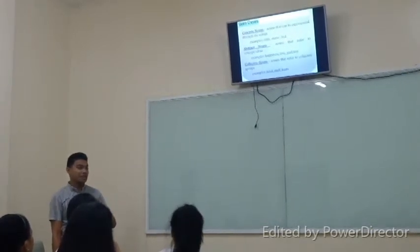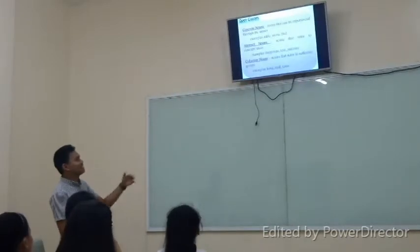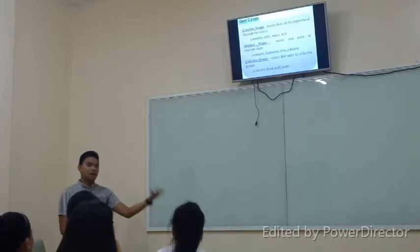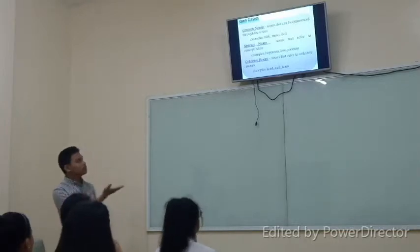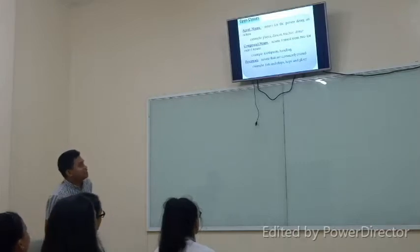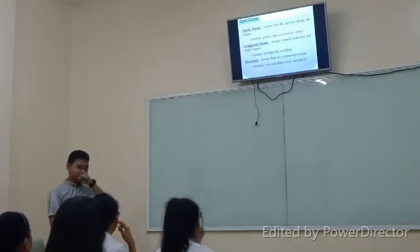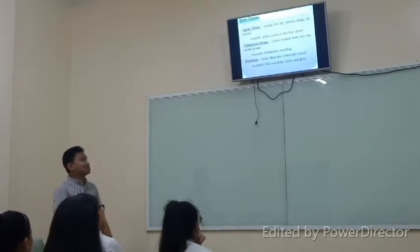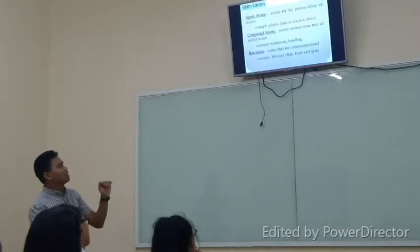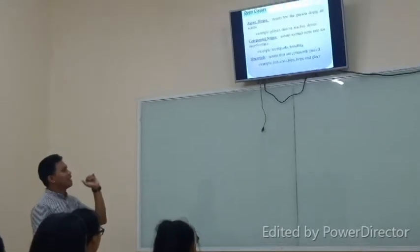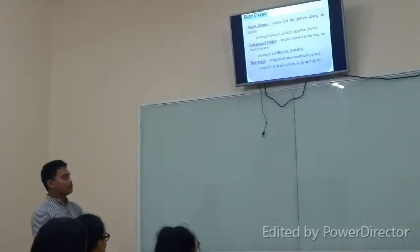Next is collective nouns — these are nouns that refer to a collective group. For example, 'staff' means a group of, say, school officials. Or 'murder of crows' — when you're referring to a group. Next is agent nouns — nouns for the person doing an action. For example, a player, dancer. Agent nouns are commonly used in documentaries. Compound nouns are nouns formed from two or more words. Binomials are nouns that are commonly paired together, for example: fish and chips, salt and pepper, and similar combinations.